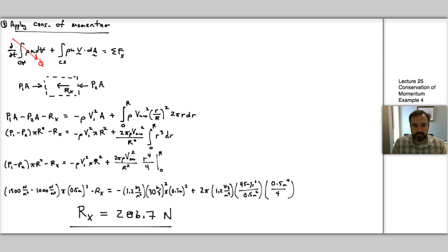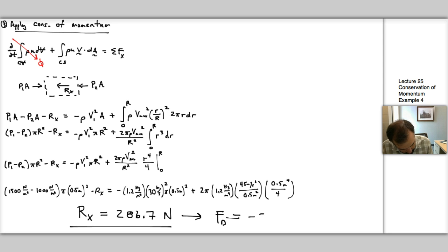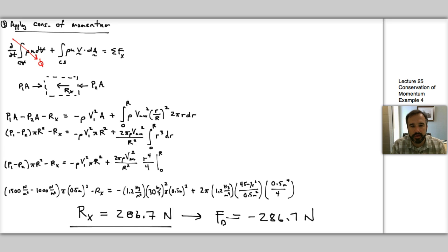Plugging in: 1500 N/m² minus 1000 N/m² times π times 0.5² minus Rx equals negative 1.2 kg/m³ times 30² m²/s² times π times 0.5² plus 2π times 1.2 kg/m³ times 45² m²/s² over 0.5² times 0.5⁴ over 4. After simplification, Rx equals 286.7 newtons. This is the force on the fluid due to the model, so by Newton's third law the drag force on the model is negative 286.7 newtons.